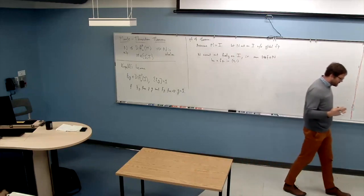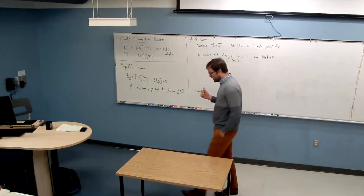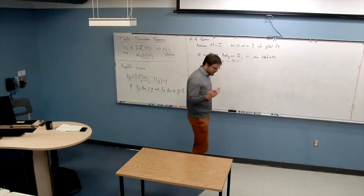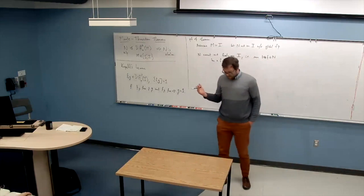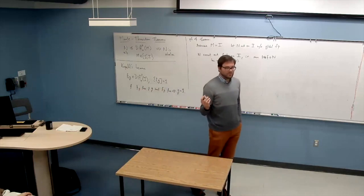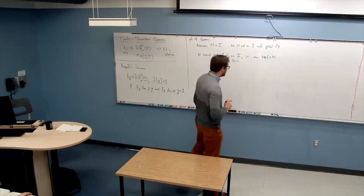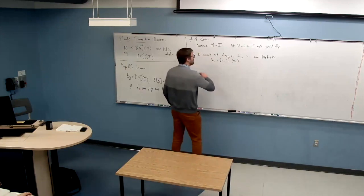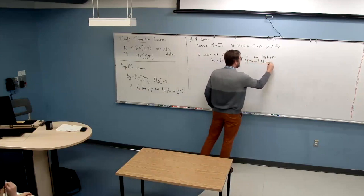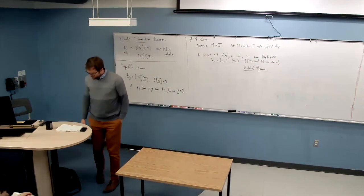Why is this? Secretly, this is Hölder's theorem, which Adam already introduced us to. If you have a group acting on the real line by homeomorphisms, acting freely, then the induced order is automatically Archimedean, and so there's an injection of that group into the reals — you're automatically abelian. This is provided N is not abelian, and follows from Hölder's theorem.